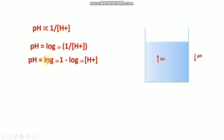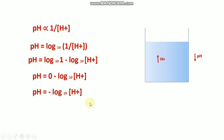If you modify the equation, it becomes log₁₀(1) minus log₁₀[H⁺]. Since log₁₀(1) equals 0, it simplifies to: pH = −log₁₀[H⁺]. This is the equation used to solve problems related to pH. It can also be rearranged as [H⁺] = 10^(−pH), which is useful for solving other types of problems.